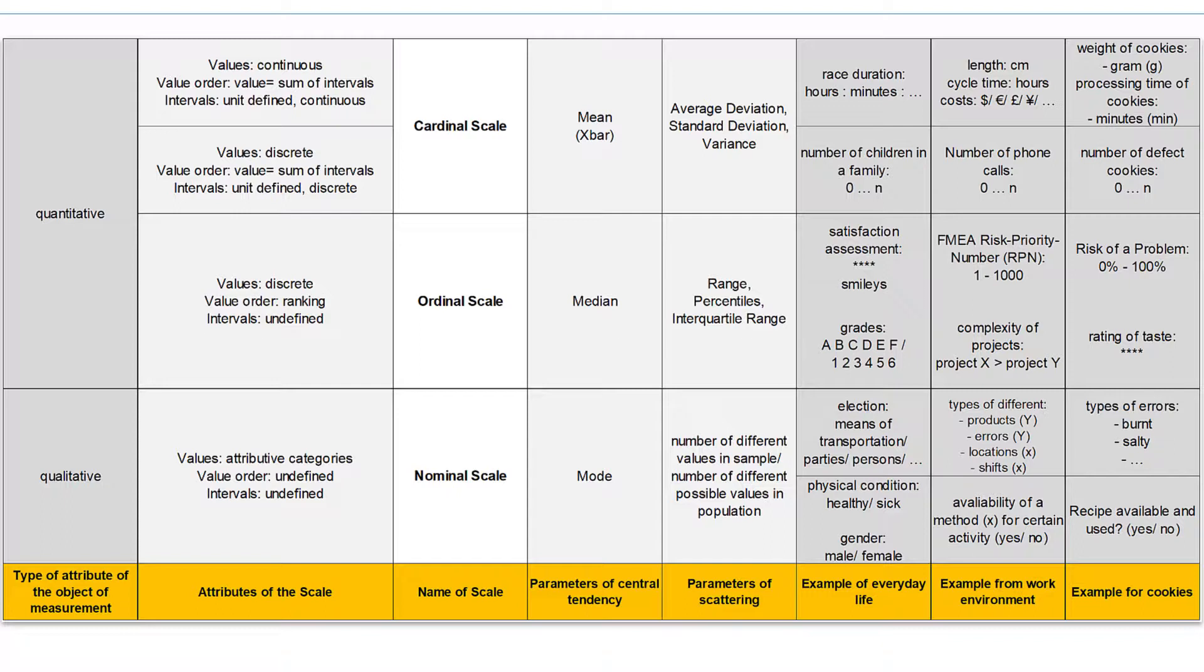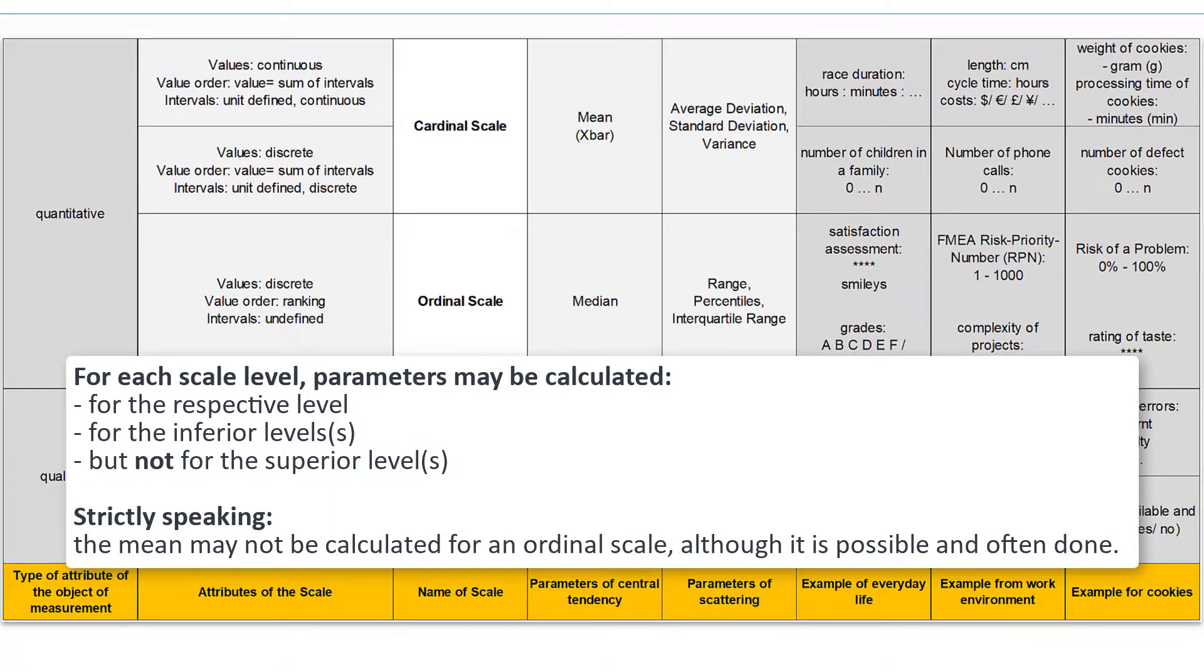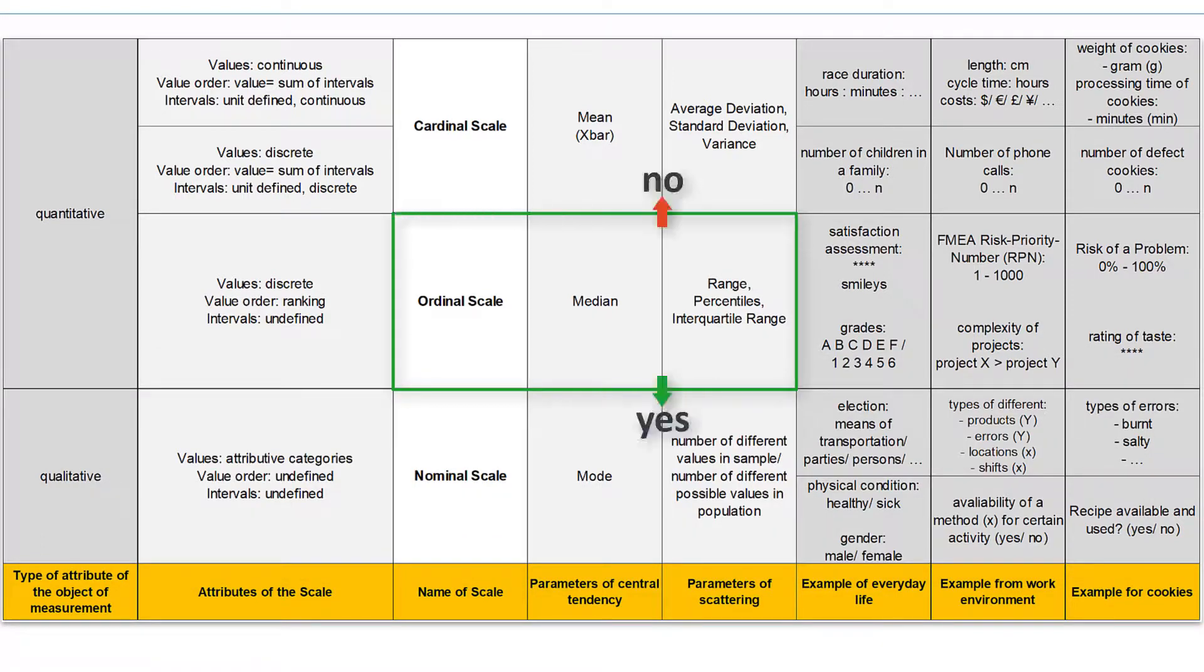We have already seen above that the mean value cannot be calculated for nominally scaled data. However the median, ordinal, could be calculated for the number of daily emails, cardinal. In general, for each selected level the associated parameters and the parameters of the lower levels can be calculated. This does not apply the other way around. The parameters of a superior level may not be calculated for data on the selected level. You can easily convince yourself by comparing the formulas and the information they process. For example neither the mean value nor the standard deviation should be calculated for satisfaction data, because on the ordinal scale the intervals are not defined.